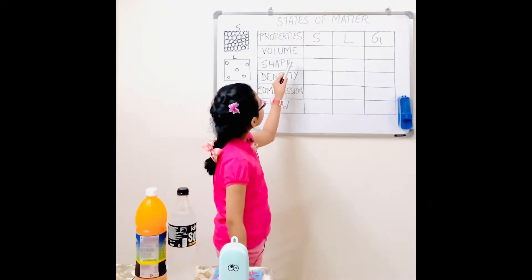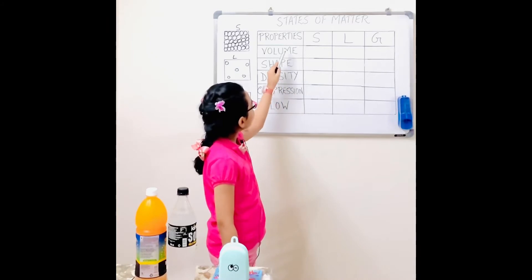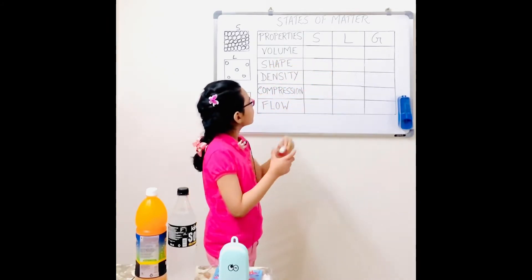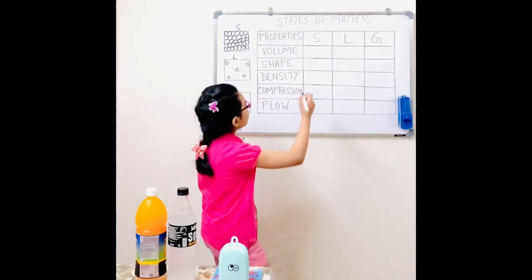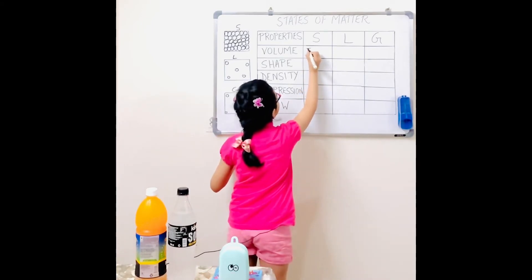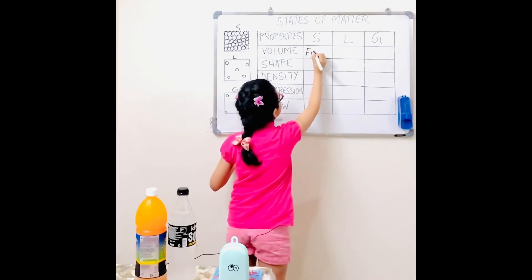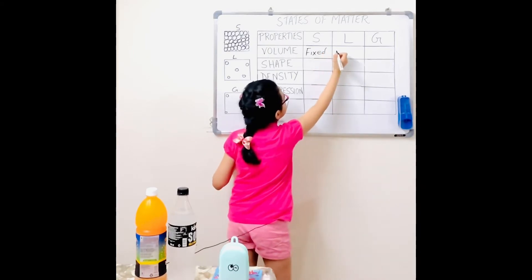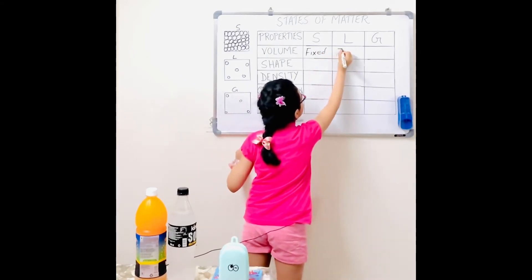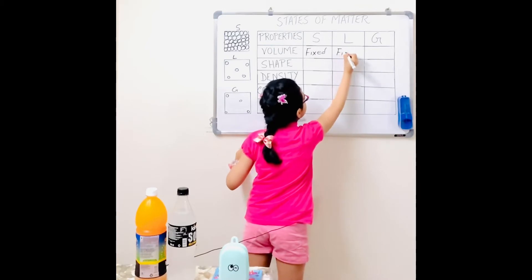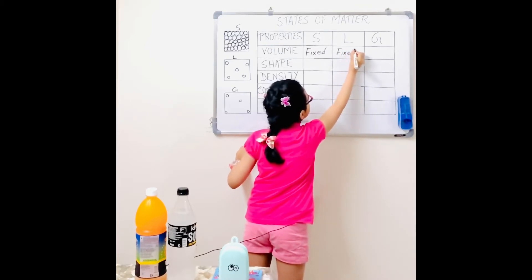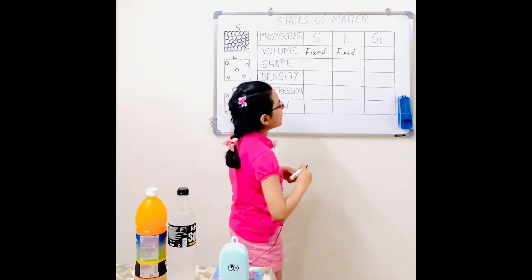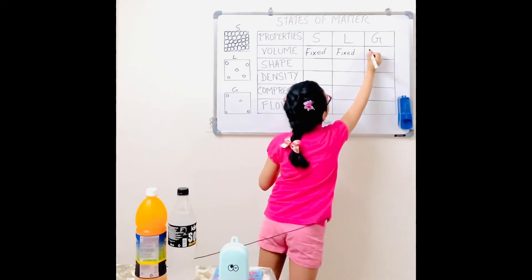Now I'm going to fill in this table that will show the properties of solids, liquids, and gases. First, for the volume: in solids it's fixed, in liquids it's fixed, and in gas it fills its container.